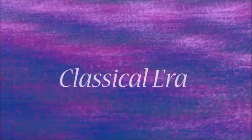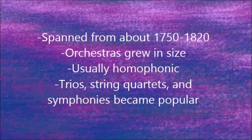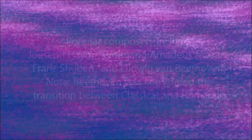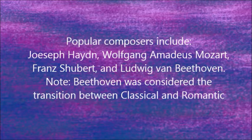The Classical era spanned from about 1750 to 1820. Orchestras grew in size, music was usually homophonic, and trios, string quartets, and symphonies became popular. Popular composers include Joseph Haydn, Wolfgang Amadeus Mozart, Franz Schubert, and Ludwig van Beethoven.